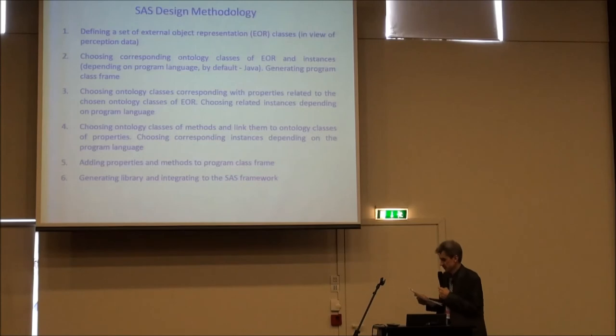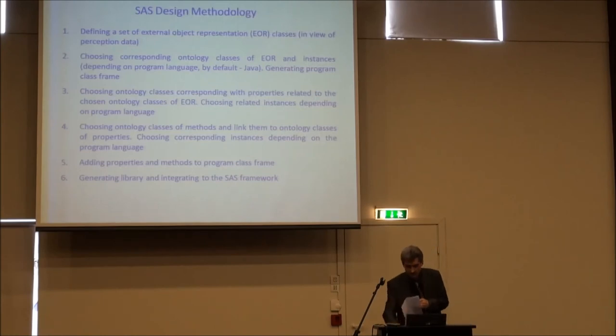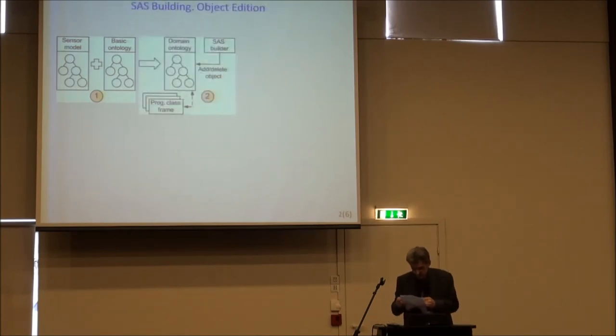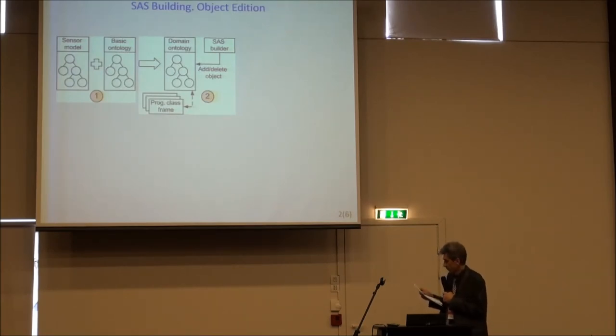This design methodology includes next steps. Let's consider them step by step. On the first step, we have initial data of design process. These are sensor models that provide the primary properties for external objects, and full basic ontology that includes entities for broad spectrum of applications and environments. This ontology can be replenished over time. Having this information, user forms more narrow domain ontology dedicated for design data in accordance with its environment and functions. He selects only classes needed for his particular purposes.